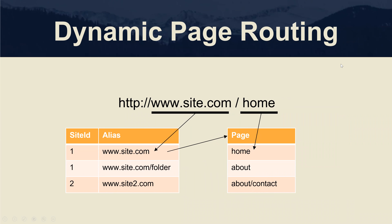Dynamic page routing is a concept that is part of Octane, which is directly tied to the multi-tenancy aspect of the framework. Basically you can have many different sites that are part of an Octane installation. The sites can be in their own database or they can be in a shared database. Regardless, the way the Octane framework processes them is it looks at the URL and basically parses out the constituent parts.